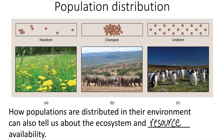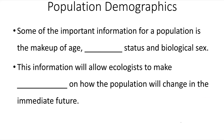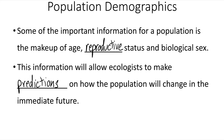Population demographics is another aspect ecologists are interested in. Important information for a population includes the makeup of age, reproductive status, and biological sex. This information will allow ecologists to make predictions about how the population will change in size in the immediate future.